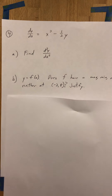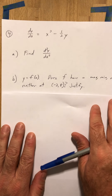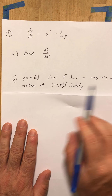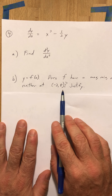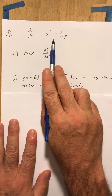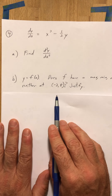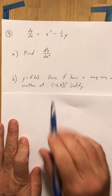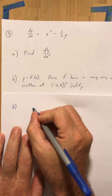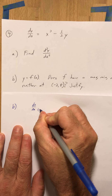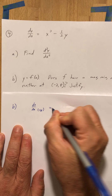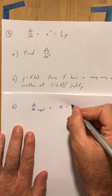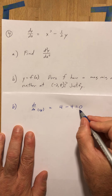Part b asks: if y equals f of x is a solution to this differential equation, is there a max, min, or neither at negative 2, 8? Negative 2, 8 is a point on the graph of f. I need to figure out what the first and second derivatives are at this point. For part b, dy/dx at the point negative 2, 8 is going to be 4 minus 1 half times 8, which is 4, which equals 0.